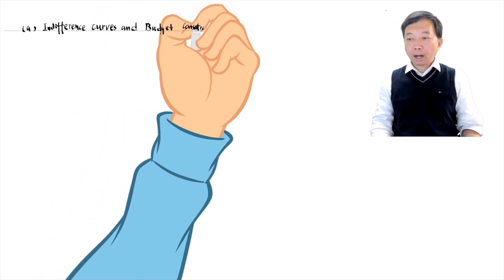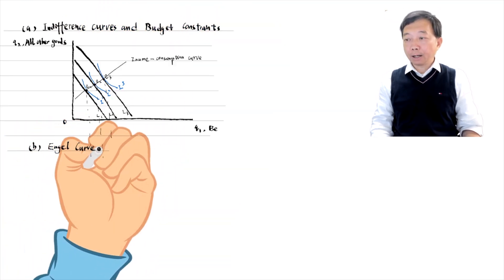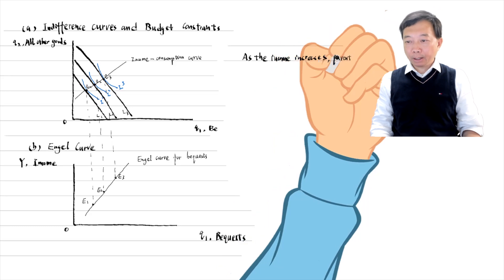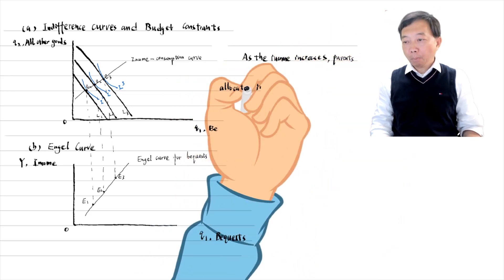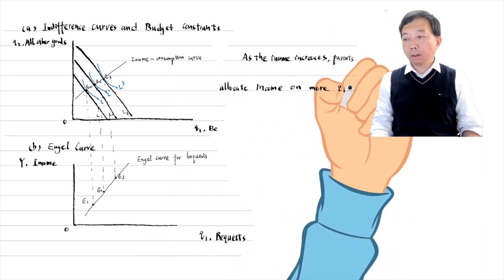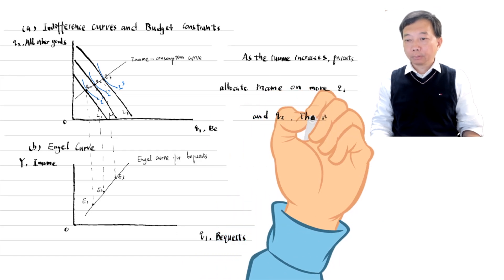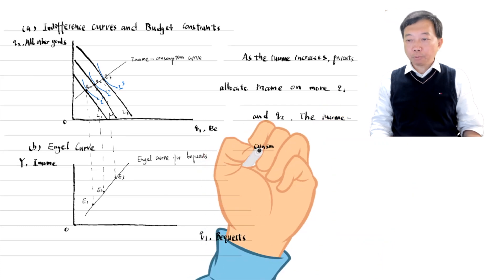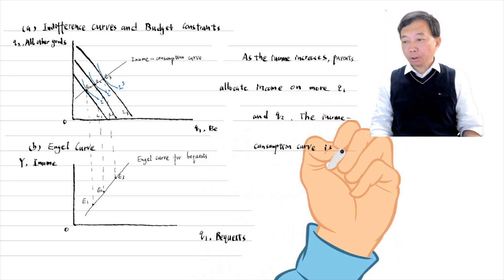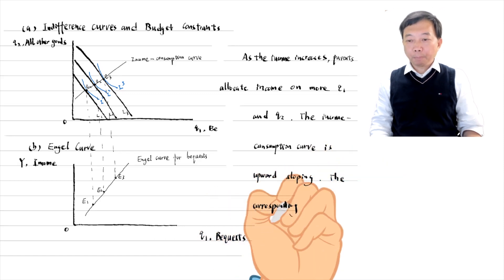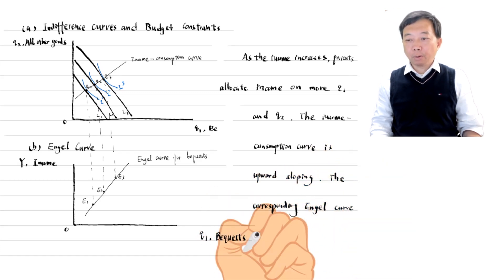The indifference curve budget constraint diagram and the Engel curve diagram are as follows. As the income increases, parents allocate income on more bequests Q1 and more other goods Q2. The income consumption curve is an upward sloping straight line. The corresponding Engel curve for bequests is also upward sloping.